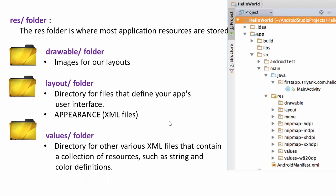Next comes the values folder. In the previous video, this values folder contains a string that appears in your layout. Inside the activity_main.xml there was a text 'Hello World', and that text is actually stored inside the values folder. With the help of reference quotes, these two folders are linked.